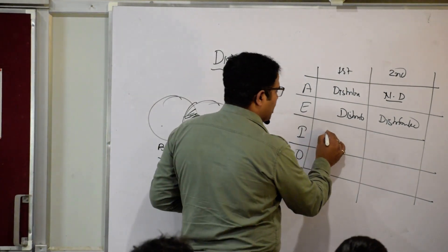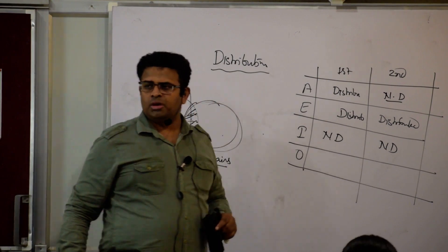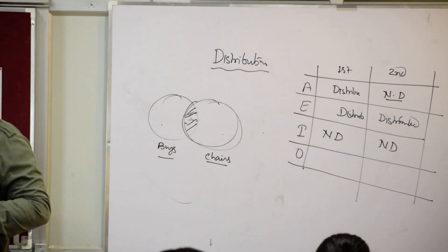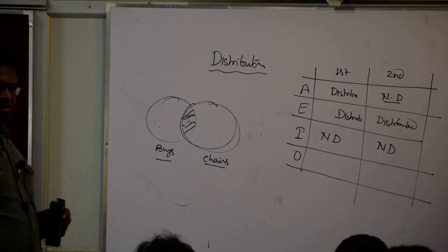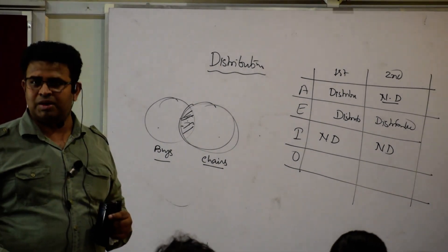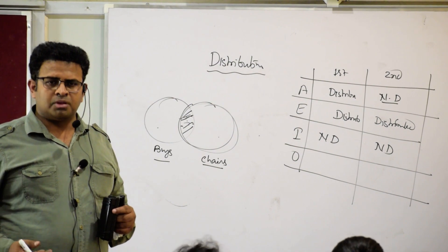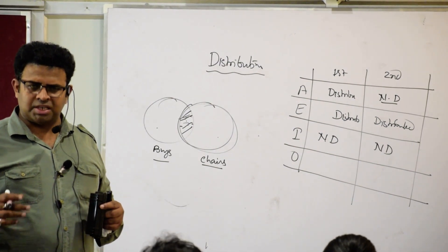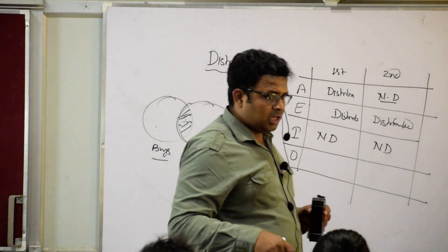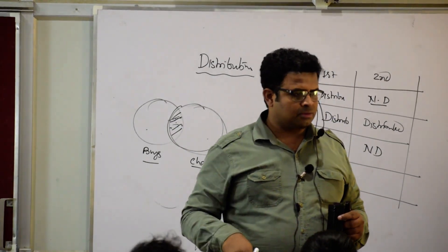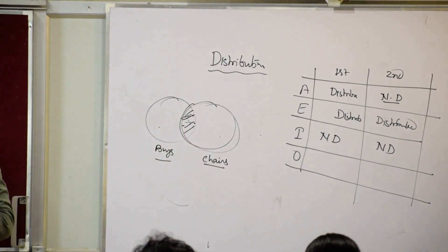So in case of I, both terms are not distributed. Now moving to the fourth statement — O. Some boys are not chairs. In case of A: first term distributed, second term not. In case of E: both distributed. In case of I: both not distributed.